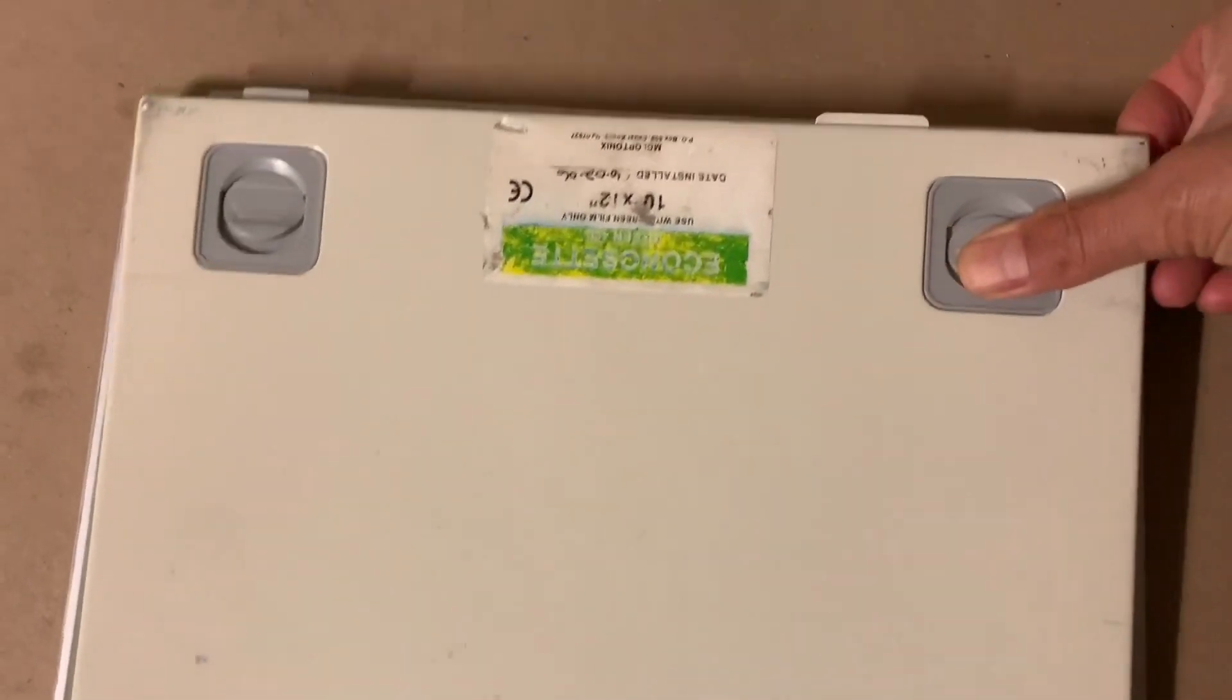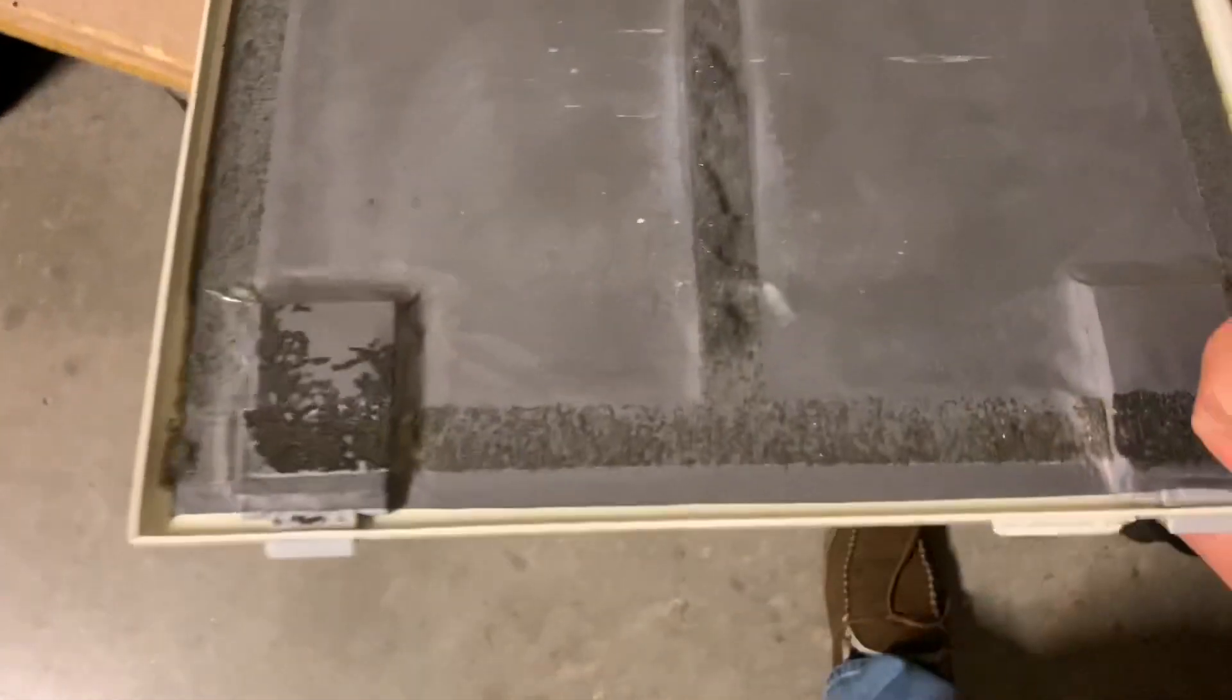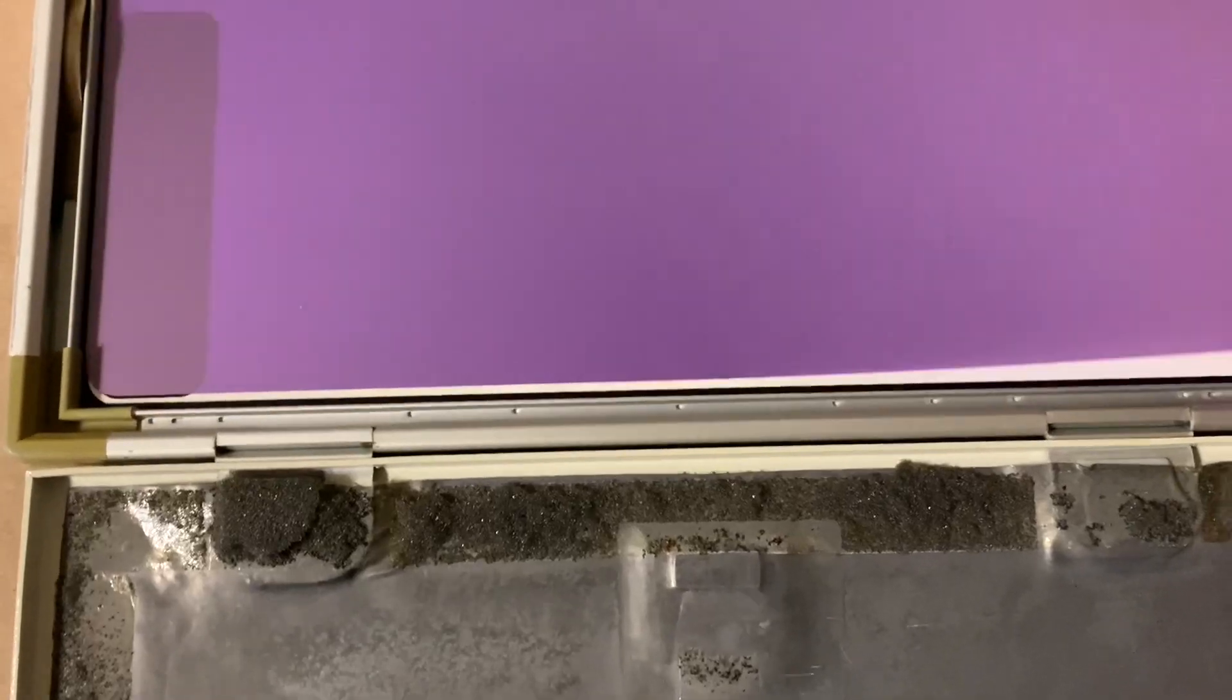This is how you get the green fluorescent screen out of the cassette. Just open it up and you've got two screens, you got a screen here behind this purple plastic, it's got a screen there and you've got another screen right here.